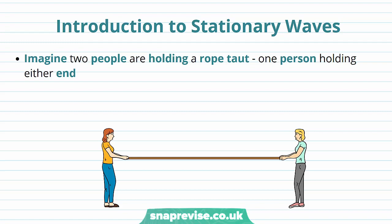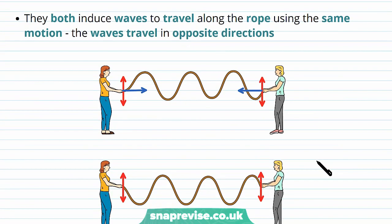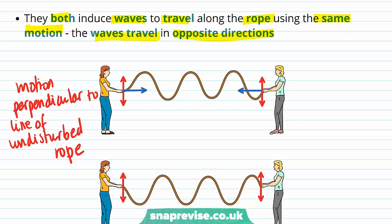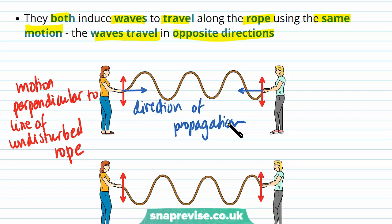To understand what stationary waves are and how they form, imagine two people holding a rope taut, one person at either end. They both induce waves to travel along the rope using the same motion. The waves travel in opposite directions — the direction of oscillation is up and down, perpendicular to the line of undisturbed rope. The blue line shows the line of undisturbed rope and the direction of propagation.